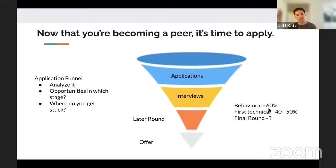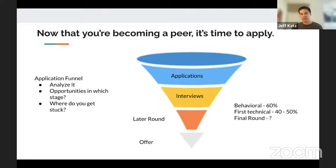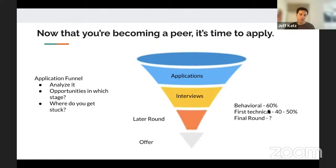Some good benchmarks: for behavioral interviews, aim for around 60% pass rate — if you're below 50%, practice these questions with a friend. For first-round technical, around 40-50% is pretty good; there will be some you're just unprepared for. For the final round, I honestly think it's unpredictable — it's very hard to diagnose what happened. Your goal is to get to the final round. Some will work out, some just won't. But if you're getting to final rounds at two or three companies, that's great.